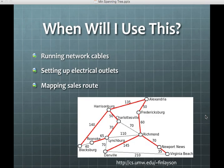Just to review — when might you use this? This example here, we have a sales route where somebody has to hit all of these different places. We know the miles between them, so we could make a minimum spanning tree so the miles driven is the least. Or setting up electrical outlets or network cables — these are the types of things where you would see this.